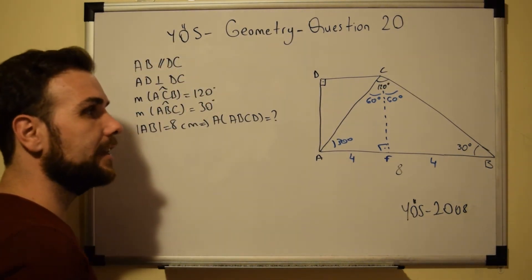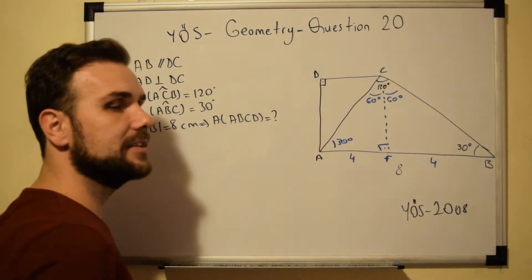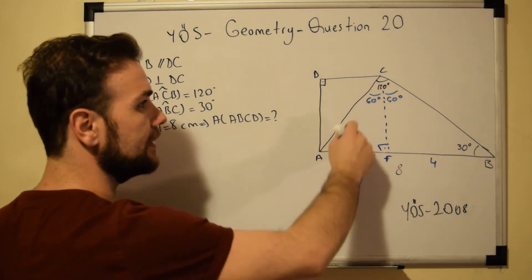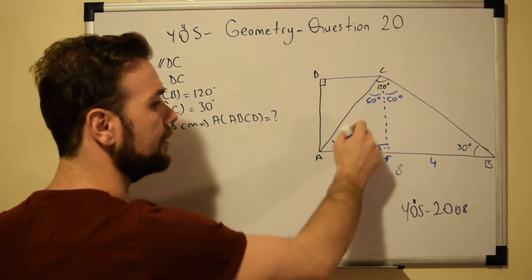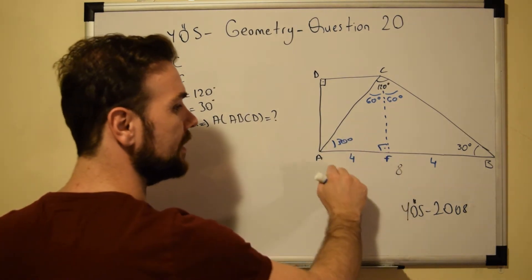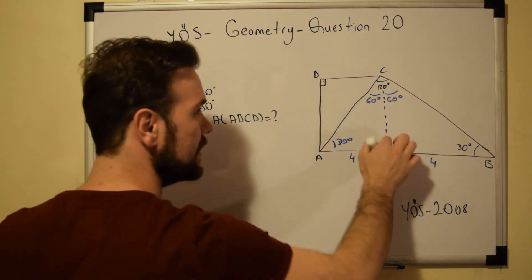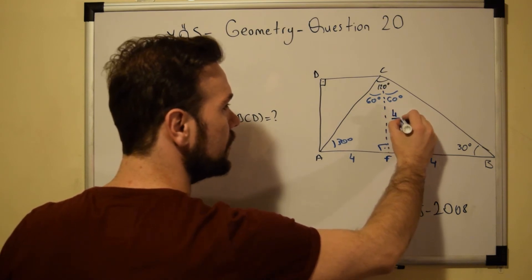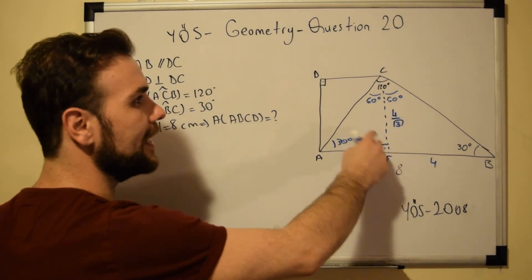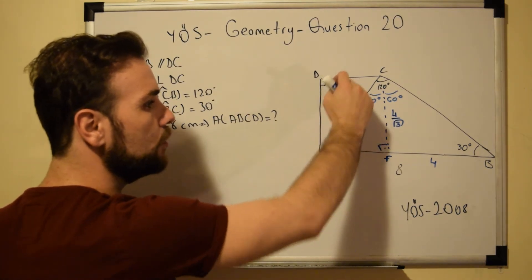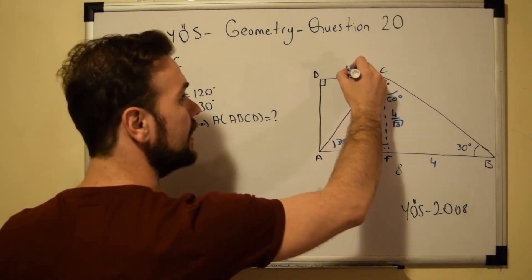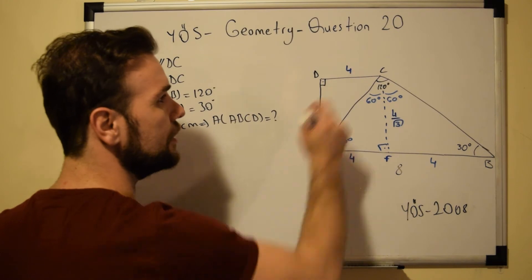We now have a special right triangle: 90 degrees, 30 degrees, and 60 degrees. The side in front of the 60-degree angle is 4, so the side in front of the 30-degree angle is 4 over square root of 3. By drawing this perpendicular line I also created two equal sides, and AF equals DC. So since AF is 4, DC will be equal to 4.